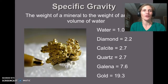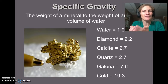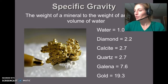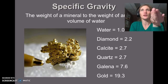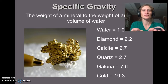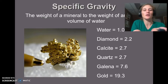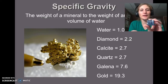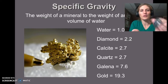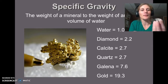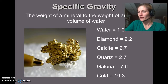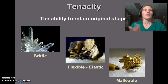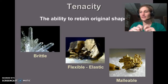Specific gravity tells us the heft of a mineral sample. Compare sample 3 (galena) and sample 4 (graphite) — they're about the same size, but galena feels much heavier. Galena contains lead, a heavy element, so it feels significantly heavier than graphite, which is just carbon. Tenacity tells us how flexible a mineral is: brittle minerals break when bent, flexible or elastic minerals like biotite can be bent and spring back, and malleable minerals like gold can be hammered into different shapes.